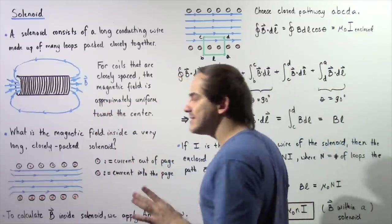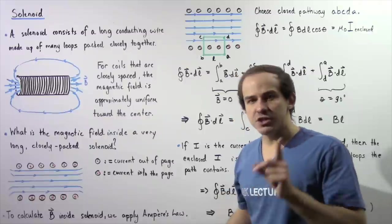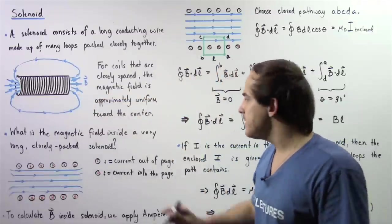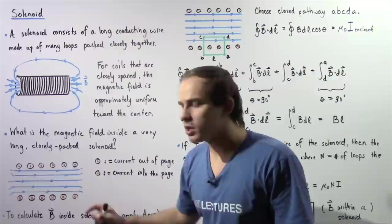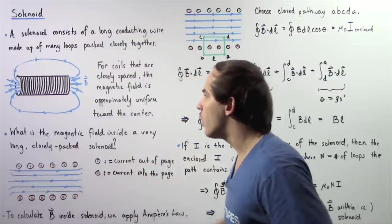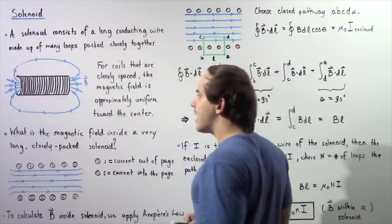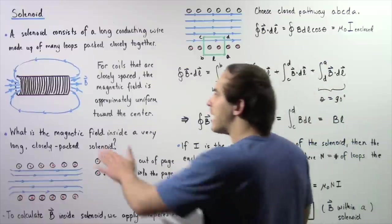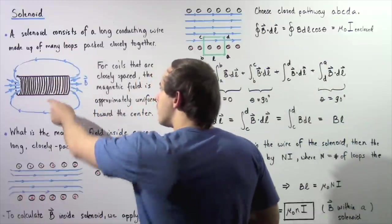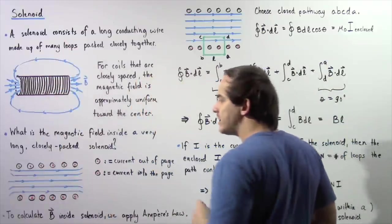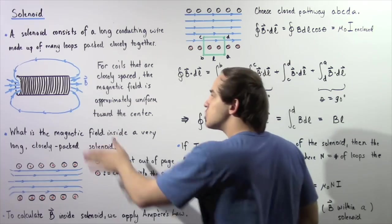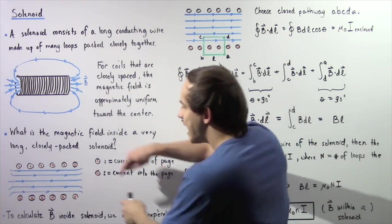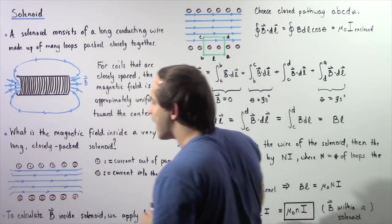What exactly is the equation that gives us the magnitude of our magnetic field inside a very long, closely packed solenoid as described in this diagram? Let's begin by taking a cross-section of the solenoid, essentially slicing it to get the following diagram.